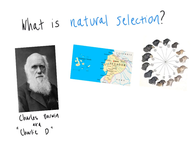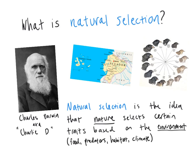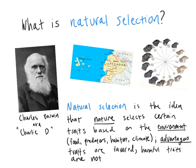So what exactly is natural selection? Natural selection is the idea that nature selects certain traits based on the environment, which can include predators, food supply, and climate. The environment is going to favor certain phenotypes and alleles that are advantageous, and it is not going to favor harmful or less advantageous traits and phenotypes.